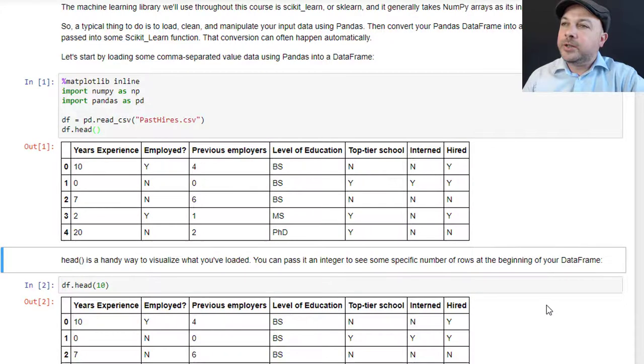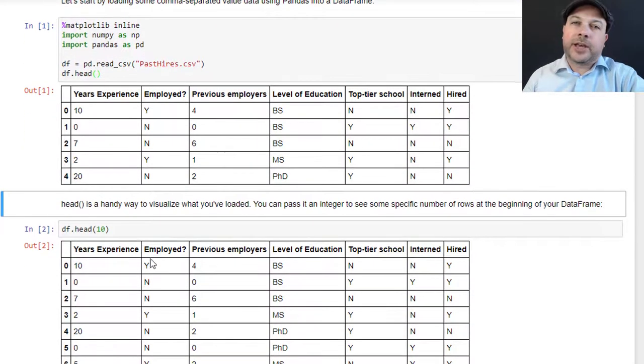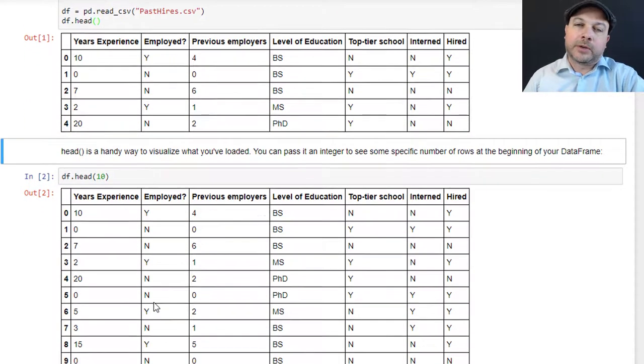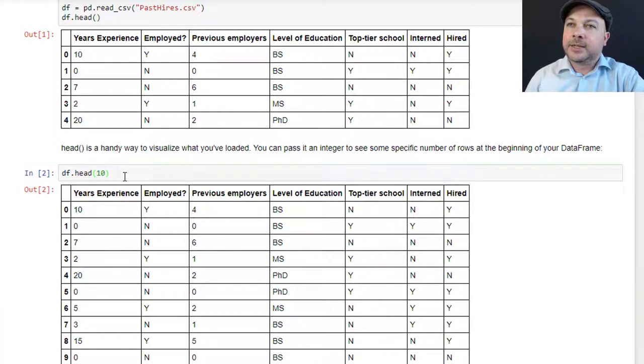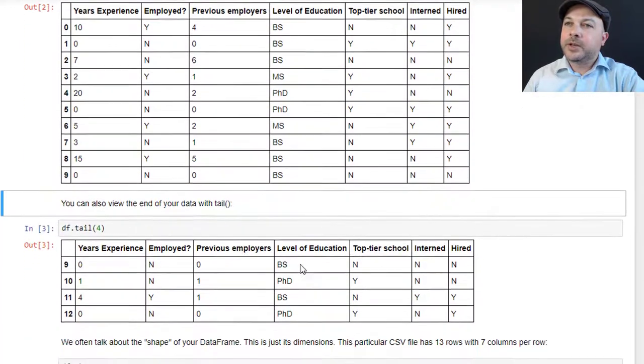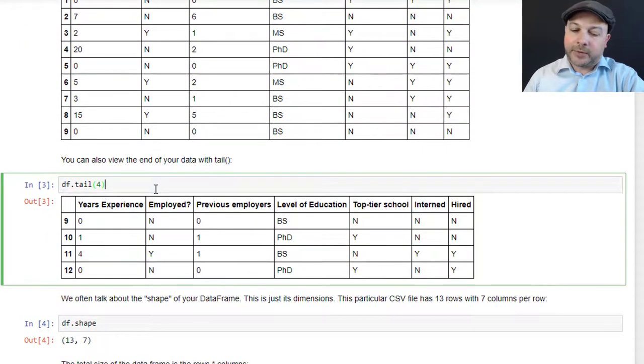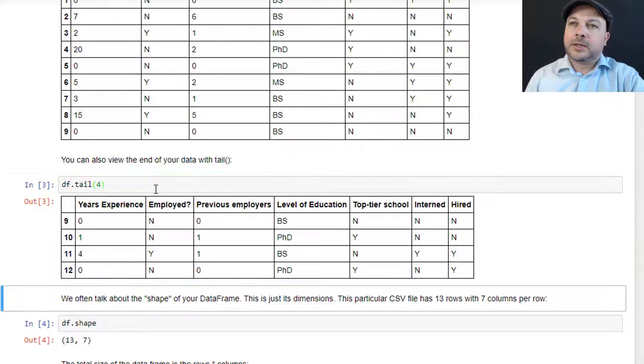You can also pass in an integer to head if you want to see some specific number from the beginning of your file. If I want to see the first 10 rows of my data frame, I could just say df.head(10) like that and I'll print out the first 10 rows. You can also look at the end of your data frame as well. df.tail will look like that and that's displaying the last four rows. You can see this is a very small data set, it only contains 12 rows of information.